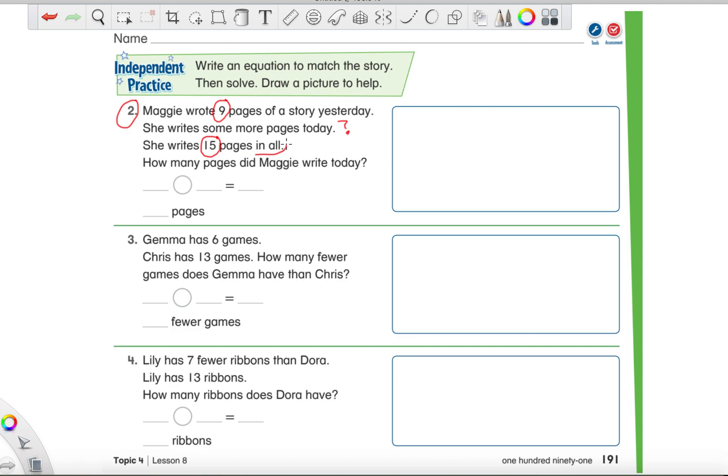We got that number 15. That's pretty important. And what words do we hear that's really special too? She writes 15 pages in all. The words in all. And those words always mean that we're going to add. So we have, we found all of our important pieces. And we have this space over here and this rectangle for you to show your work if you need some working space. Now that we know we're working with the number 9 and 15 and we need to know in all, and if she wrote 15 pages in all what space would that go in?